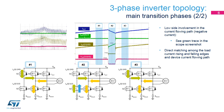Phase two: the high side device starts to switch off and then the current through it goes to zero. As I out cannot be suddenly reduced to zero and cannot change direction, it will find a freewheeling path through the body drain diode at the beginning and then in the channel of the same leg of the low side MOSFET. Phase three: the high side device is again turned on. The current reaches a peak due to the LS freewheeling current and then flows on the high side. The I out current starts to increase again.